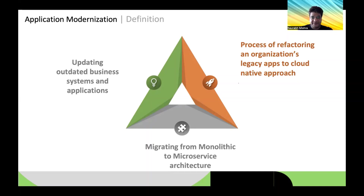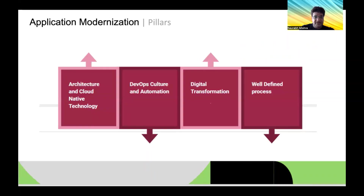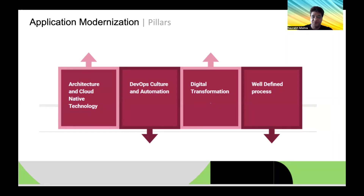The first pillar is architecture and cloud-native technology. Every company is trying to bring those legacy apps onto cloud-native platforms where they can integrate with various tools and the many open-source offerings from Kubernetes and cloud providers.